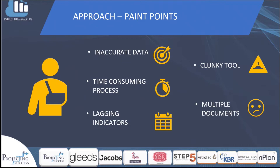Some of the pain points identified: Inaccurate data — without defined structures and closely managed fields, data is at risk of inaccuracy. Time-consuming process — manual line-by-line entry is time consuming and prone to errors, which often requires rework. Lagging indicators — outputs are lagging due to inputs not being recorded at predefined times. Clunky tool — basic Excel software which has been developed over time becomes more and more complicated to rationalize the process behind its inception. Multiple documents — reliance on multiple documents risks numerous outputs versus a single source of truth approach managed by a governing entity.